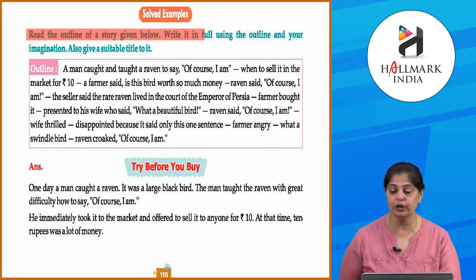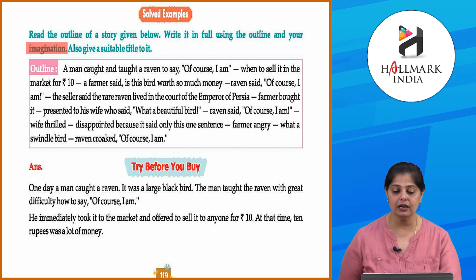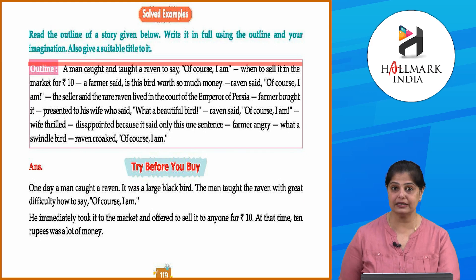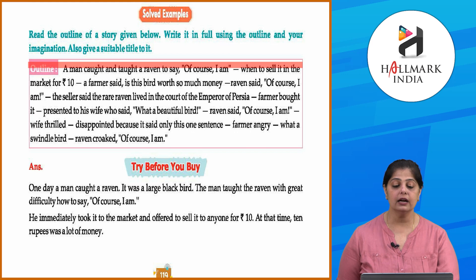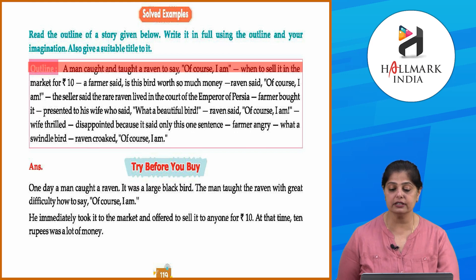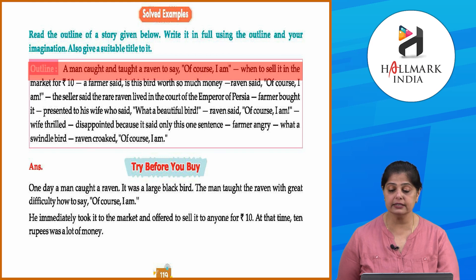Okay, let's look at the solved examples. Read the outline of a story given below, write it in full using the outline and your imagination, and also give a suitable title to it. Here is the outline: a man caught a raven and taught it to say 'of course I am,' then went to sell it in the market for 10 rupees.